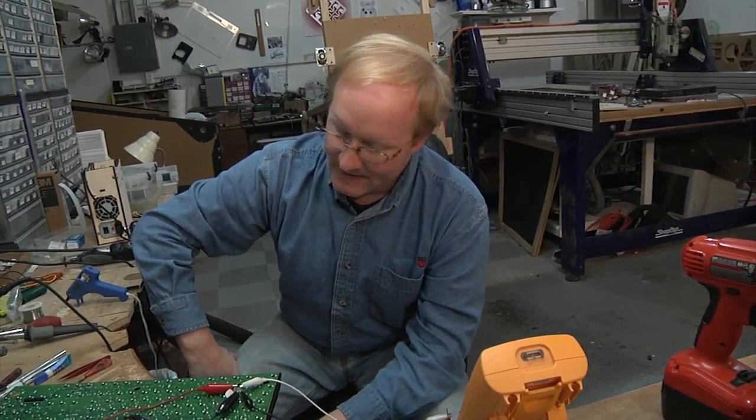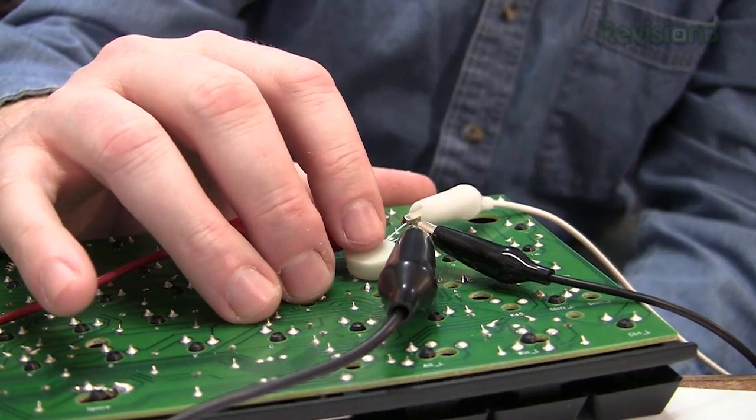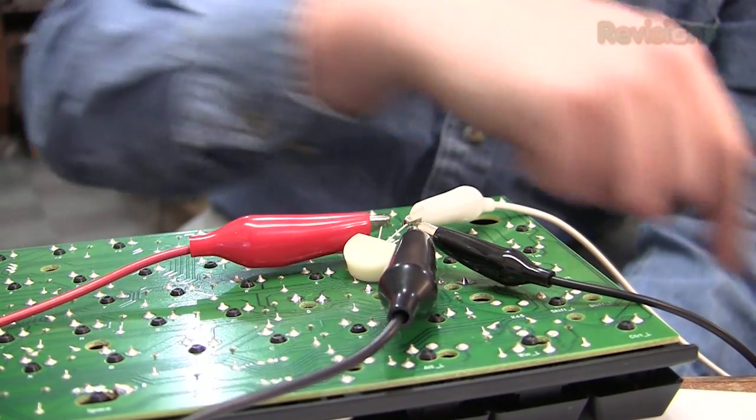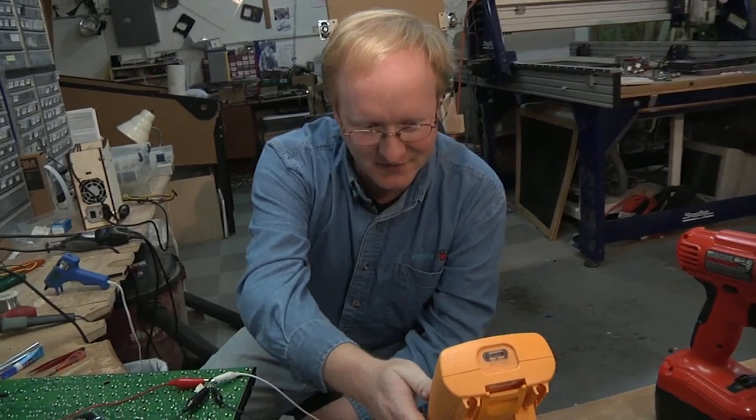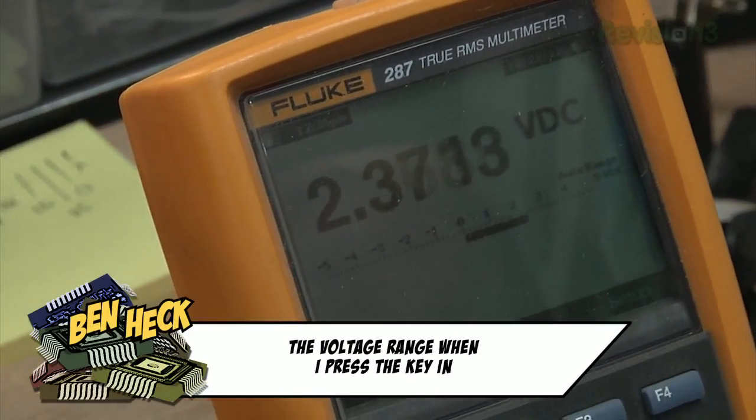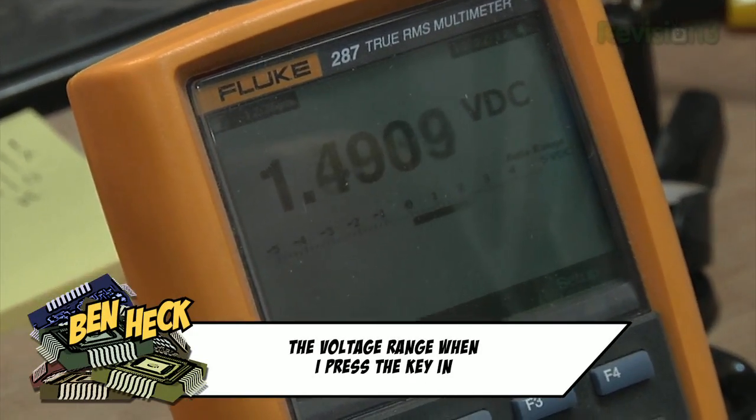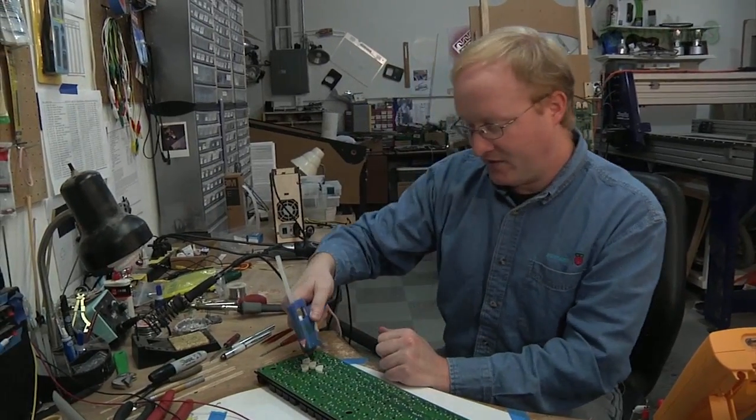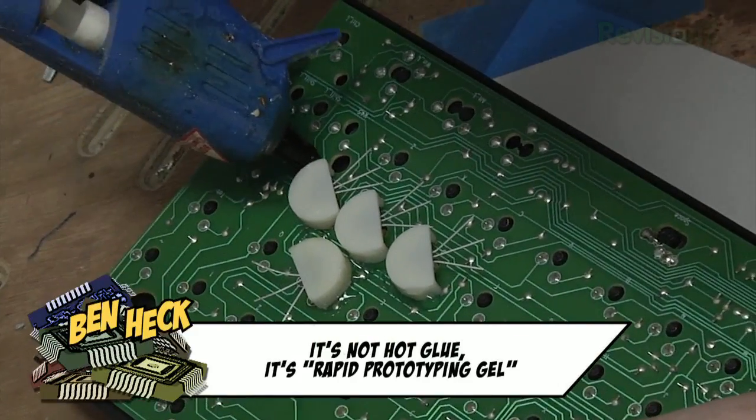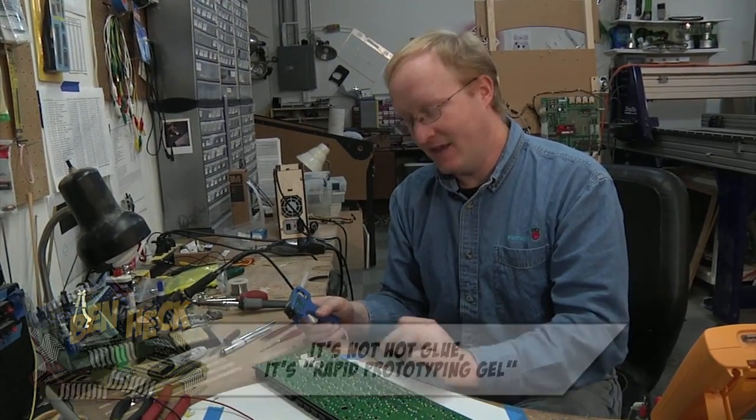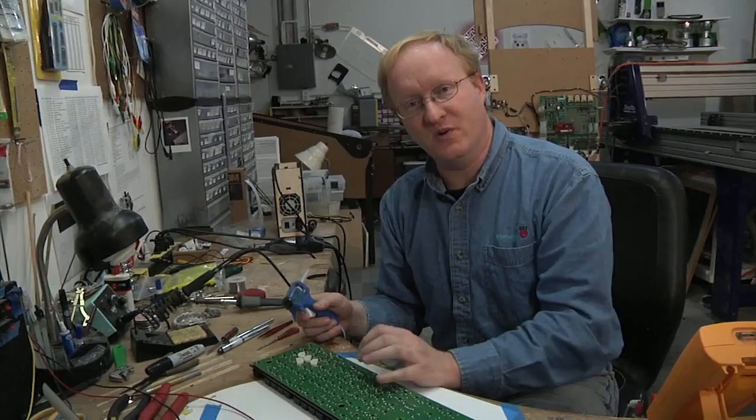Time to do a test. I hooked up the hall-effect sensor to power ground, and I also have the output of it going into my multimeter set to voltage. It's pretty good range on it, almost a full volt.